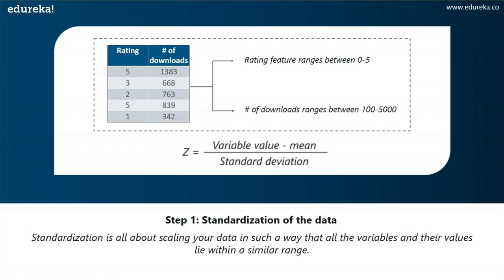Standardizing the data into a comparable range is very important, so you narrow down ratings and number of downloads into a similar range. To perform standardization, you take the value of your variable, subtract it with the mean, and then divide it by your standard deviation. That's exactly how you perform standardization — it's a simple mathematical process. You need to make sure you perform standardization because if you do not, your output is going to be very biased. When you get your data set, you perform standardization before any sort of data processing or EDA because it's important to level all your variables in one range. After you perform standardization, all your variables are scaled across a standard and comparable scale.